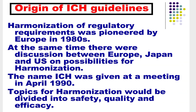Now I will tell you the origin of ICH guidelines. Harmonization of regulatory requirements was pioneered by Europe in the 1980s. At the same time, there were discussions between Europe, Japan and US on possibilities for harmonization. The name ICH was given at a meeting in April 1990. Topics for harmonization would be divided into safety, quality and efficacy.